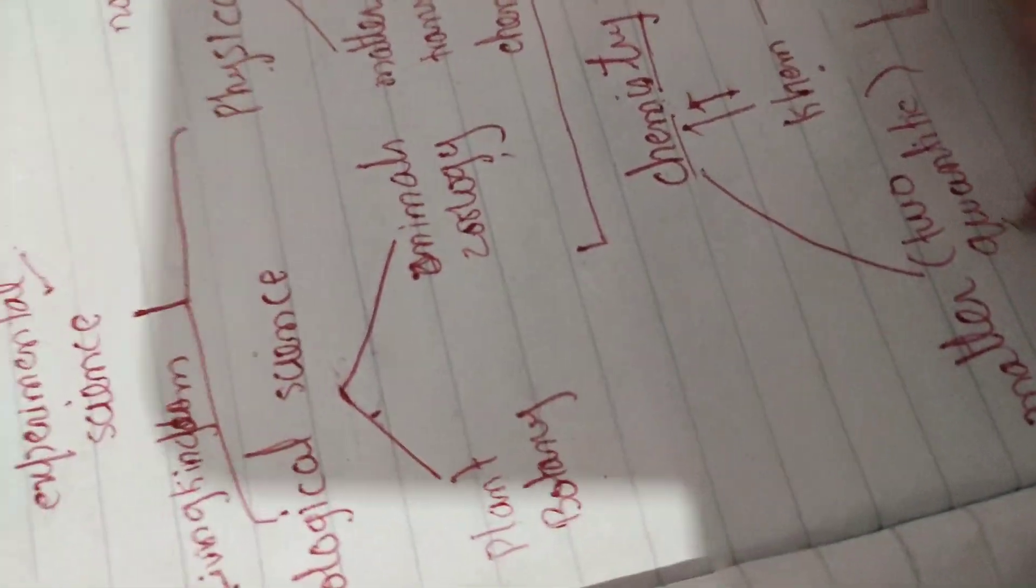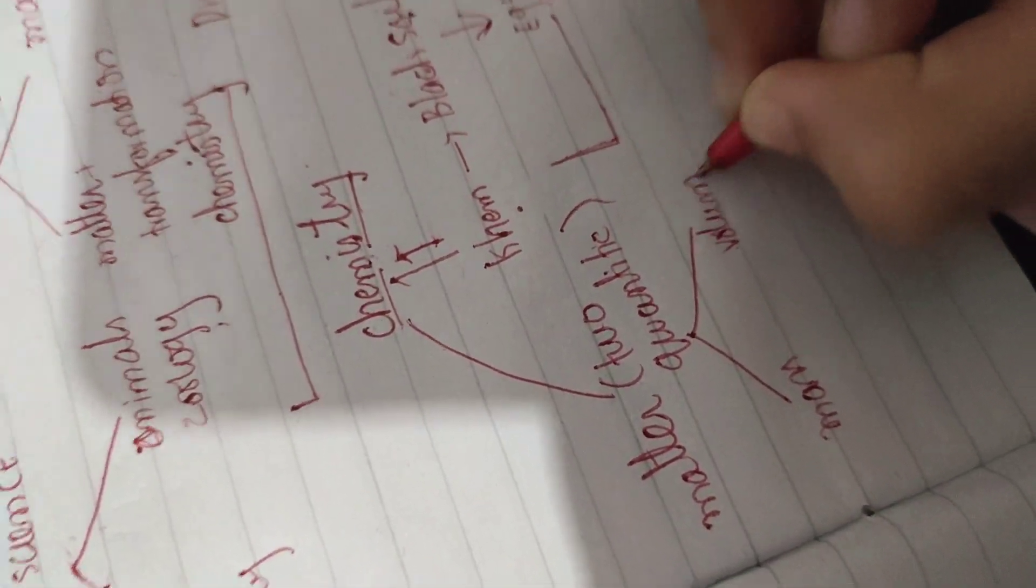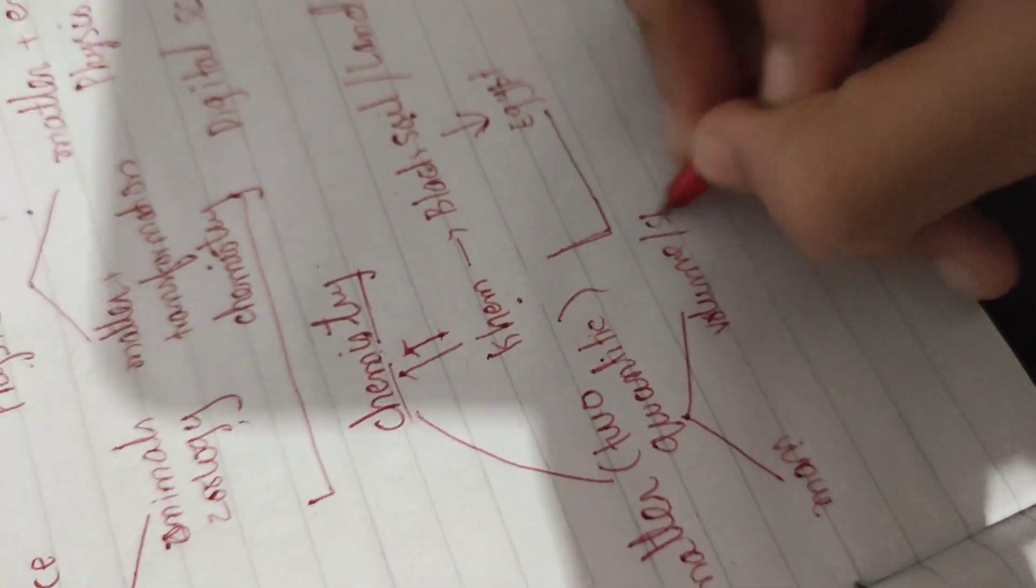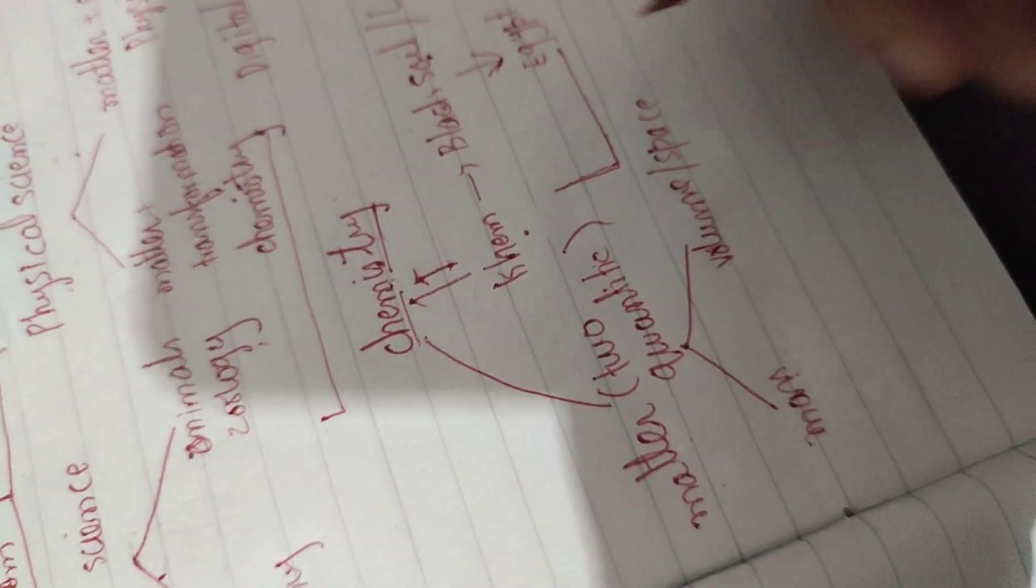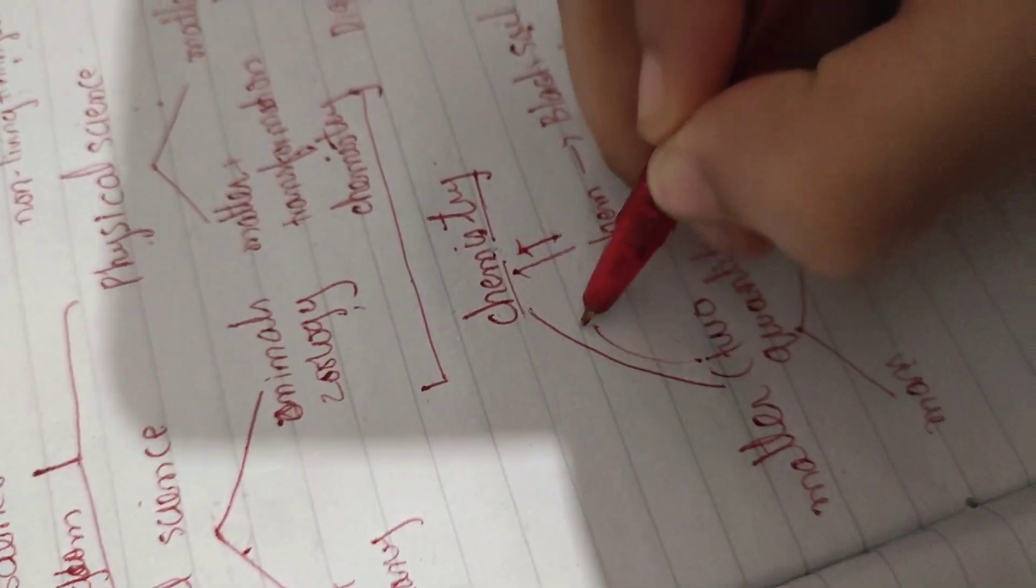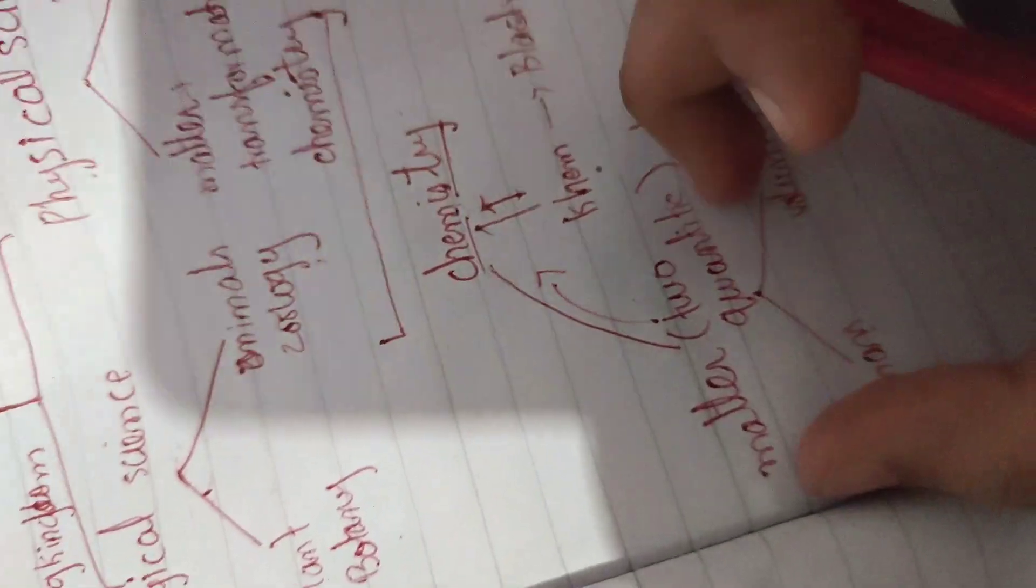The two quantities of matter are mass and volume. Because we know that matter is anything that has mass and occupies space or volume, is known as matter. So that is somehow related to chemistry. So we denote matter to chemistry. This was the introductory introduction of chemistry.